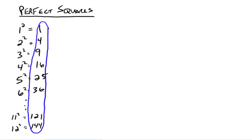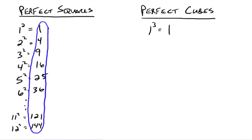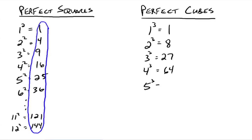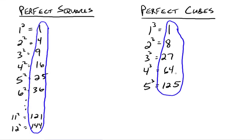Another thing to know would be some perfect cubes. 1 cubed is 1, 2 cubed is 8, 3 cubed is 27, 4 cubed is 64, 5 cubed is 125. If you know the first five — 1, 8, 27, 64, 125 — you're in pretty good shape, and knowing those are perfect cubes will help speed things up later.